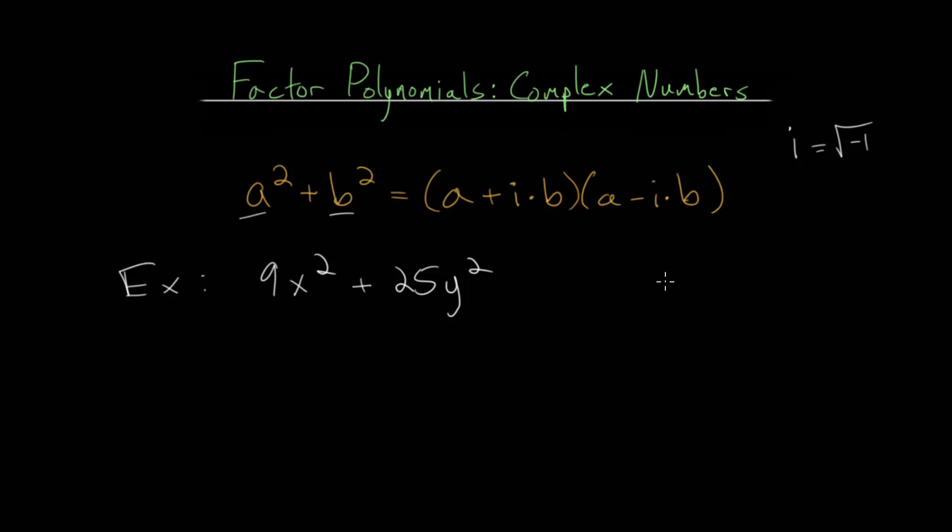And to factor this, we can either use the formula that we derived, or we can think about it from basic principles. Since the key idea for deriving this formula is to recognize that since i is the square root of minus 1, i squared is negative 1.